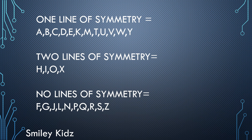Now let us see all lines of symmetry once again. One line of symmetry: A, B, C, D, E, K, M, T, U, V, W, Y. Two lines of symmetry: H, I, O, X. No lines of symmetry: F, G, J, L, N, P, Q, R, S, Z.